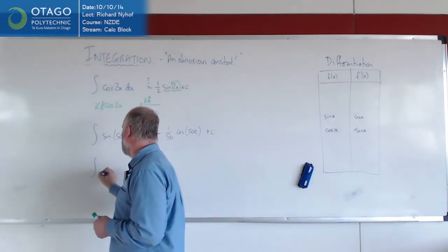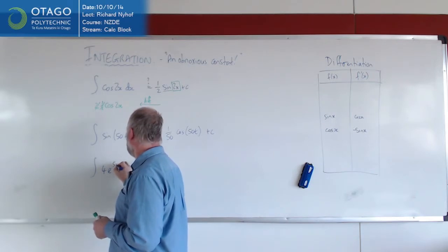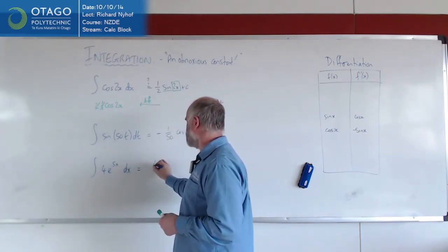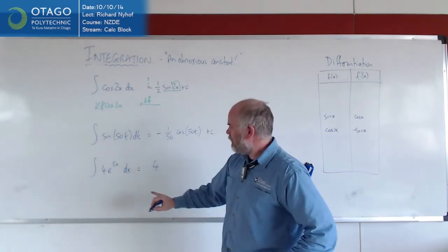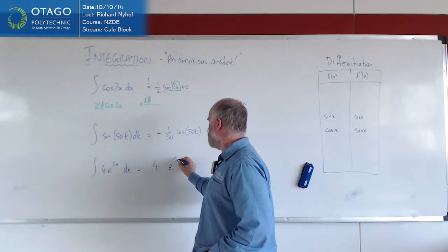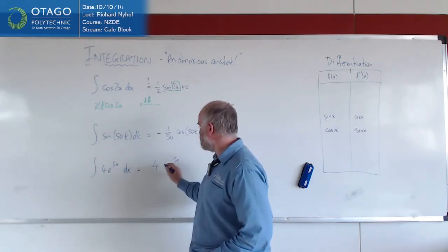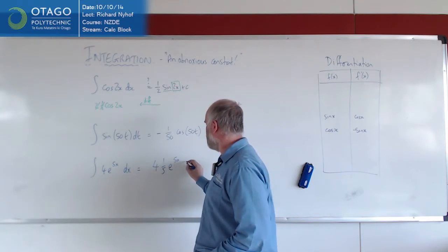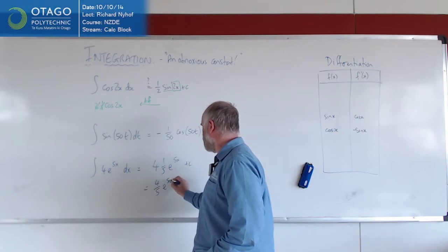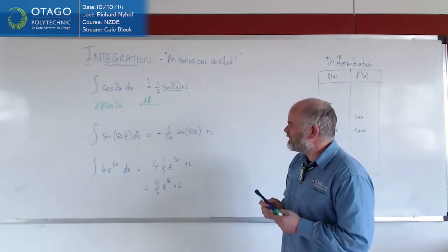So for example, if we're trying to do the integral of 4e to the 5x, the 4 is just going to be a 4, when we try and integrate e, it stays the same, but there's the obnoxious constant, is that 5, so we need a 1/5th in here, which I would write as 4/5ths e to the 5x.